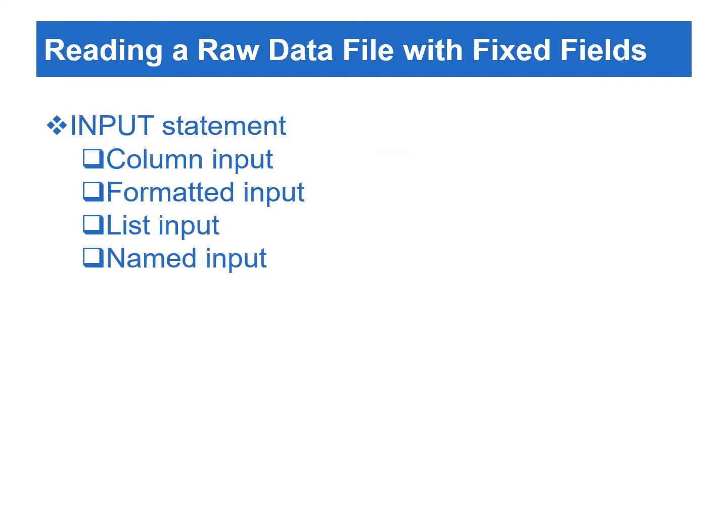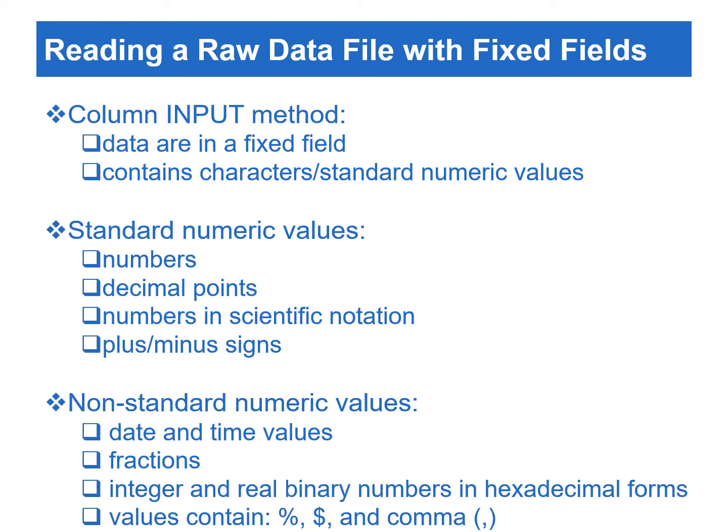Once the file location is identified from the infile statement, we need to use the input statement to read the text file. In SAS, there are four types of input methods: column, formatted, list, and named input methods. In this section, only the column input method is presented. The column input method can be used to read raw data that contains variables in a fixed field with character or standard numeric values. Standard numeric data values include numbers, decimal points, numbers in scientific notations, and plus or minus signs. Non-standard numeric data can include date and time values, fractions, integers, real binary numbers in hexadecimal forms, and values that contain special characters such as percent sign, dollar sign, and comma.